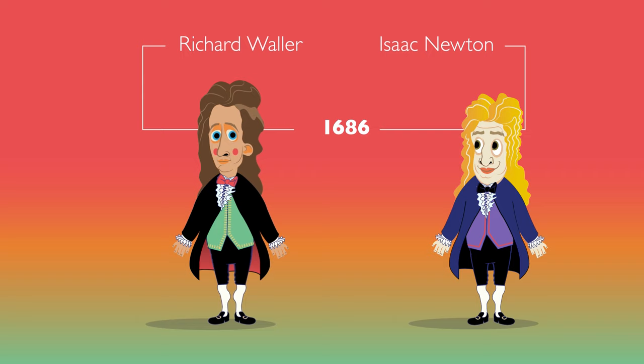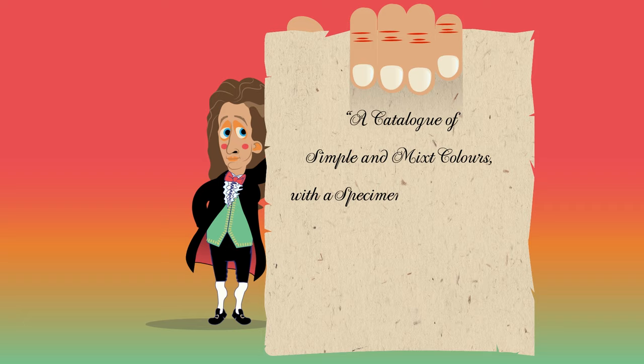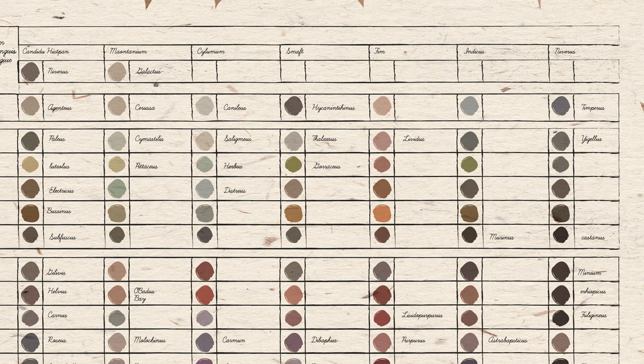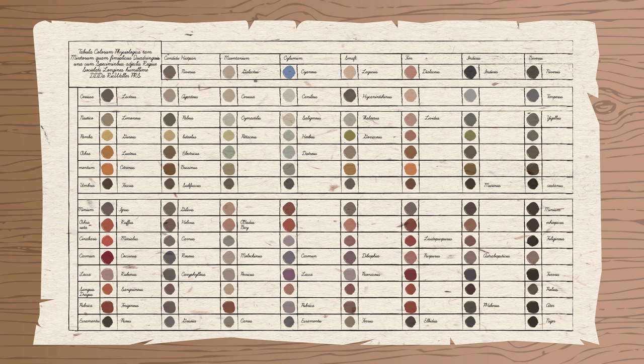In 1686, Richard Waller published an article titled A Catalogue of Simple and Mixed Colors with a Specimen of Each Color Prefix to Its Proper Name. Accompanying the article was this color chart. The simple matrix was designed to illustrate swatches of 21 simple colors alongside examples of mixed pigments that would result from various combinations of the simple colors.